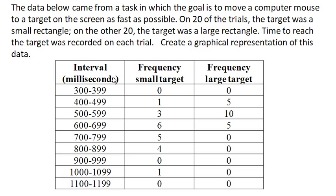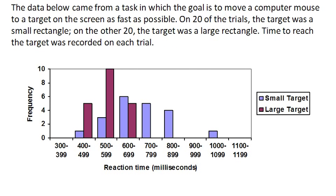To create a graphical representation, one option would be to create histograms of each of these datasets on top of each other. This is called a comparative histogram, and it would look something like this. This particular graph is done as a bar graph where the class intervals are the bar labels, mainly because of the limitations of the software being used.